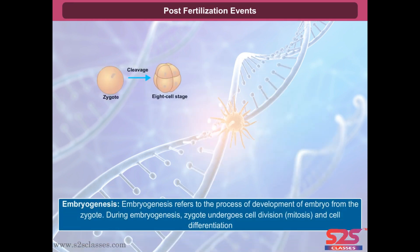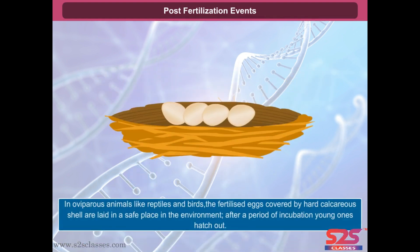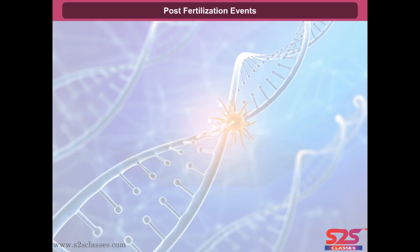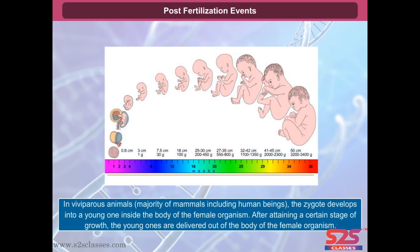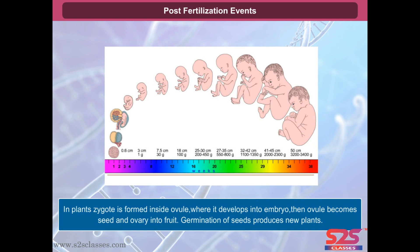Embryogenesis refers to the process of development of embryo from the zygote. During embryogenesis, zygote undergoes cell division, mitosis, and cell differentiation. In oviparous animals like reptiles and birds, the fertilized eggs covered by a hard calcareous shell are laid in a safe place in the environment. After a period of incubation, young ones hatch out. In viviparous animals, the majority of mammals including human beings, the zygote develops into a young one inside the body of the female organism. After attaining a certain stage of growth, the young ones are delivered out of the body by the female organism. In plants, zygote is formed inside the ovule where it develops into an embryo, then the ovule becomes the seed and the ovary becomes the fruit.